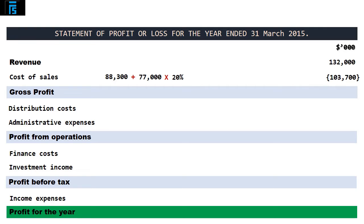We are now ready to compute the gross profit, which is revenue less cost of sales, and this comes in at $28,300. Notice that I am putting a little horizontal line above this result so as to emphasise that it is the outcome of a calculation, not an item of income or expenses in its own right. We take the next two numbers — distribution costs and administrative expenses — directly from the trial balance, which displays $8,000 and $7,400 respectively, leading to a profit from operations of $12,900.